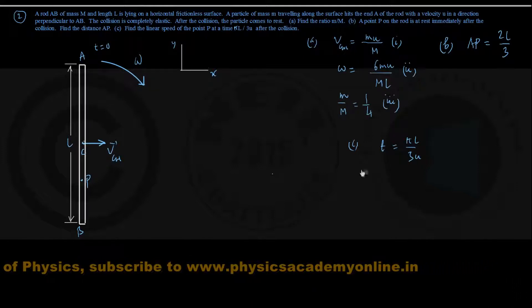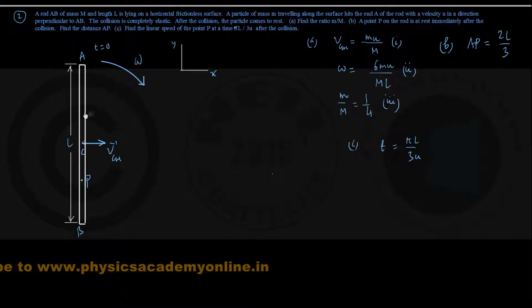So by this time t equals πL by 3u, what is the angular displacement of the rod because of its rotational motion?